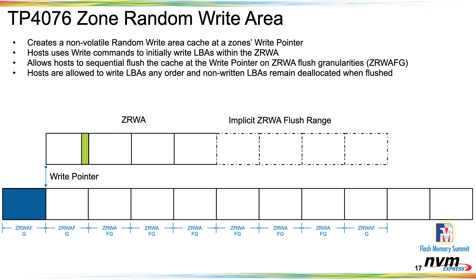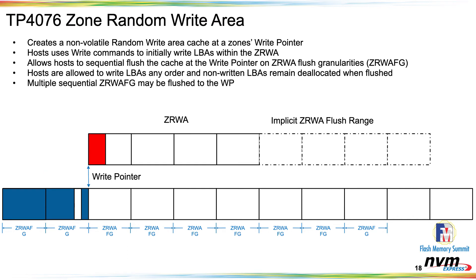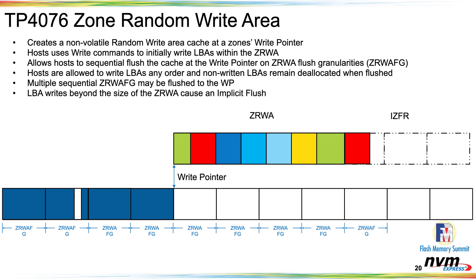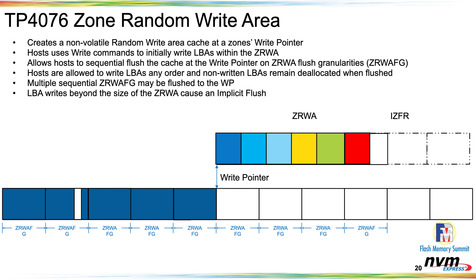You can write in any order within the flush granularity. If one area never got written and that granularity gets flushed, the write pointer advances, but those unwritten areas remain as deallocated LBAs. You don't have to write to just one flush area — you can write to multiple flush areas and flush them at one time. There's also an implicit flush: a host can write sequentially and fill up the entire Xura. If the write happens in the Xura flush range, it automatically causes an implicit flush at the beginning of the queue, the Xura moves down, and any data not part of the flush remains in the Xura cache.